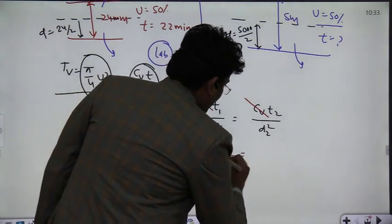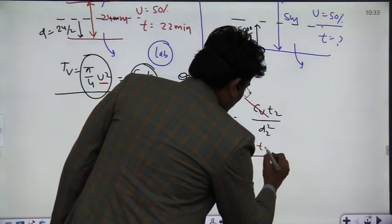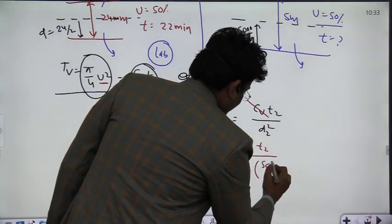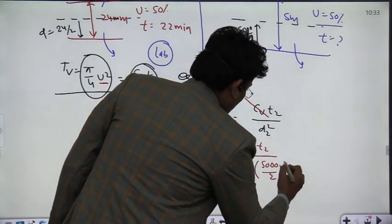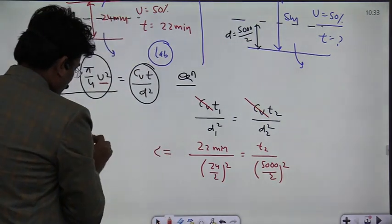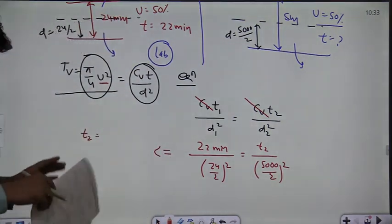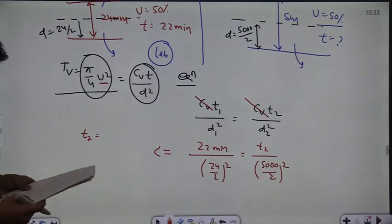So t1 in the question was given as 22 minutes. This is equal to 22 minutes. d1 is 24 divided by 2, so 24 divided by 2, this is equal to time t2 divided by 5000 divided by 2 square. So if you solve here, then you will have the time of consolidation in the field.